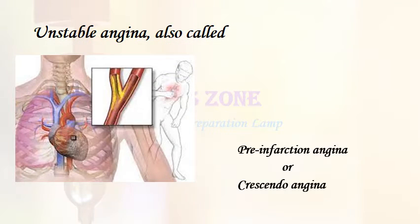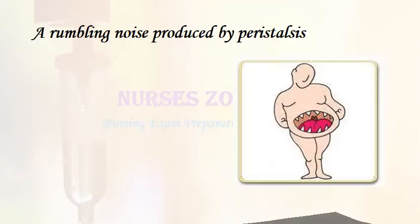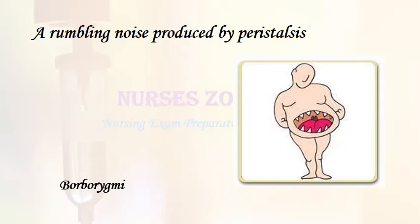Unstable angina, also called pre-infarction angina or crescendo angina. A rumbling noise produced by peristalsis: borborygmi.